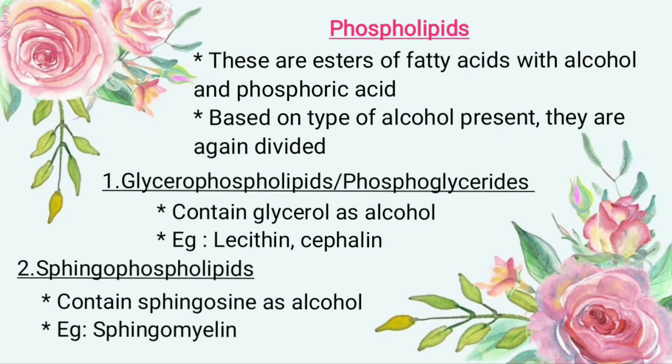Phospholipids are esters of fatty acids with alcohol and phosphoric acid. Based on the type of alcohol present, they are divided into two: glycophospholipid or phosphoglyceride, and sphingophospholipid. Glycophospholipids contain glycerol as alcohol — examples include lecithin and cephalin. Sphingophospholipids contain sphingosine as alcohol — example: sphingomyelin.